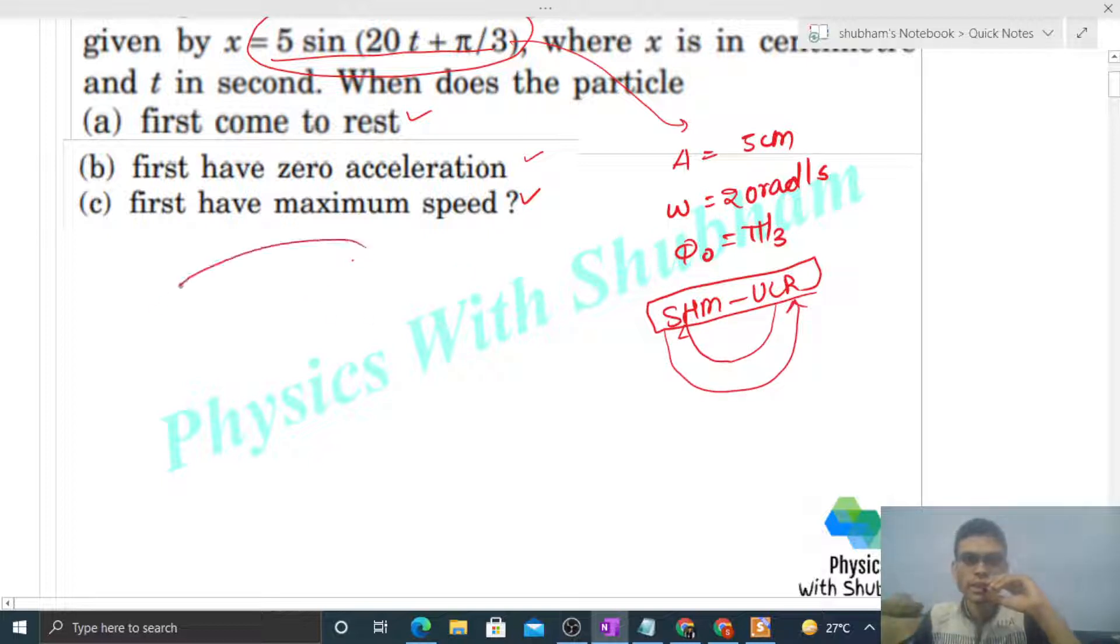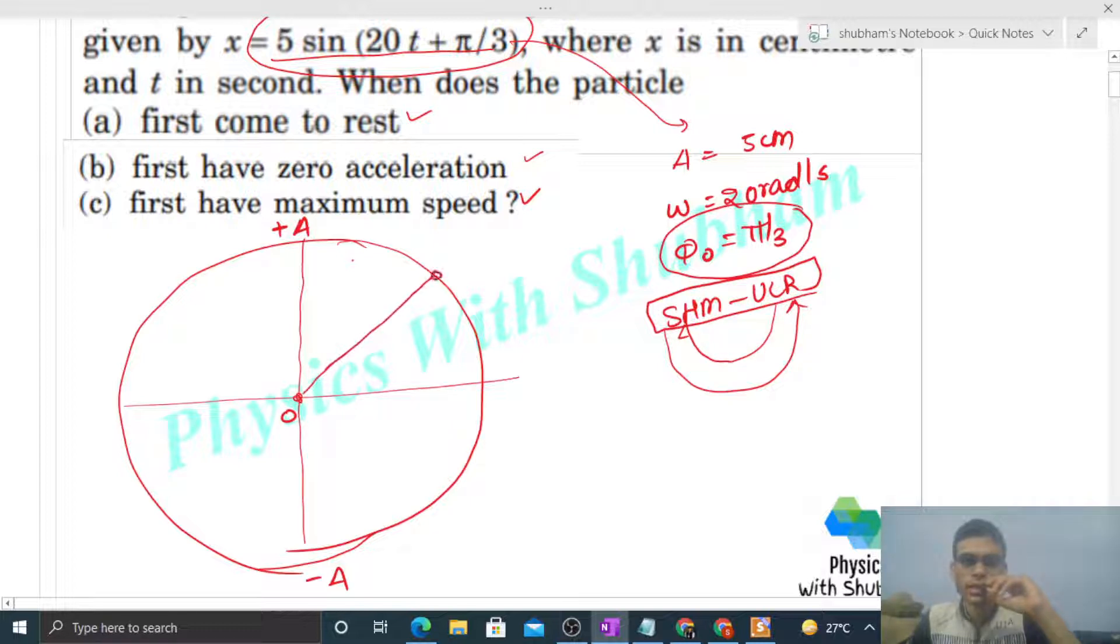We have a circle whose radius will be the amplitude of the SHM. This circle's radius will be A, so this will be +A, this will be zero, and this is -A. Now what will be the initial position of the particle? At φ₀ = π/3, the initial position of the particle is here.